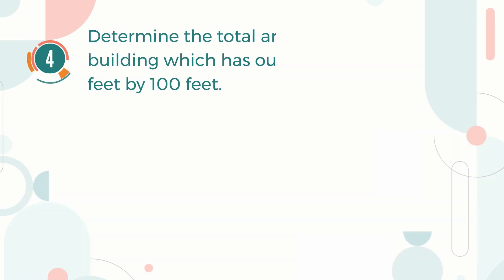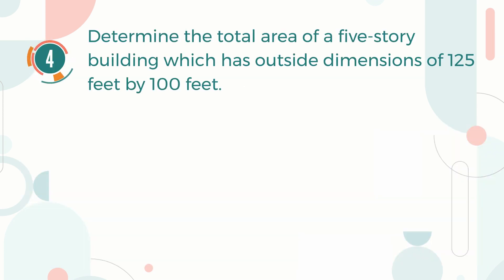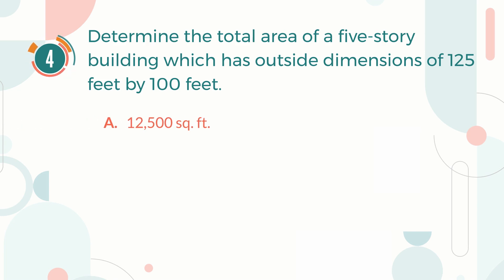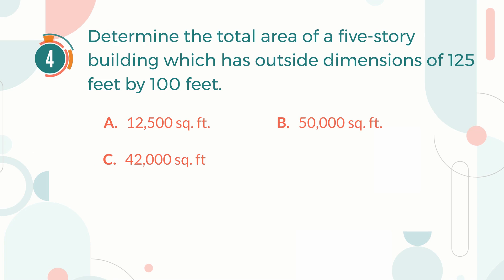Number 4. Determine the total area of a 5-story building which has outside dimensions of 125 feet by 100 feet. A. 12,500 square feet. B. 50,000 square feet. C. 42,000 square feet. D. 62,500 square feet.